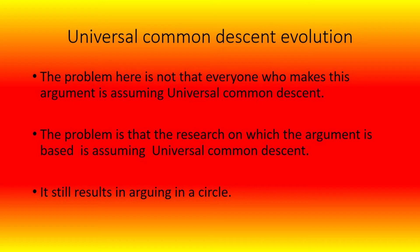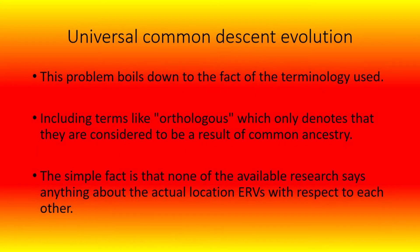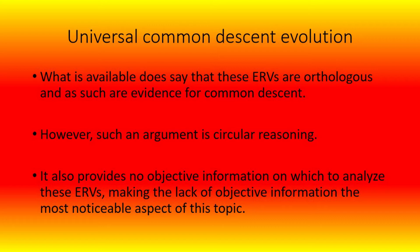The problem with the universal common descent assumption is not that everyone who makes this argument is assuming it, but that the research on which the argument is based is itself assuming universal common descent — resulting in circular reasoning. The terminology used, including terms like 'orthologous,' only denotes that sequences are considered to be a result of common ancestry. None of the available research says anything about the actual location of ERVs with respect to each other, making the lack of objective information the most noticeable aspect of this topic.